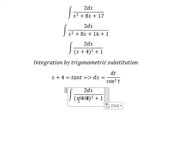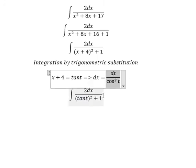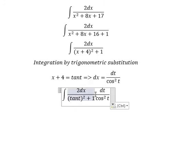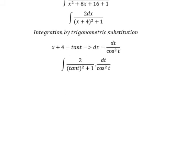We change this one for tan(t) and dx we change for this expression. We have the formula: 1 + tan²(t) equals 1 over cos²(t).